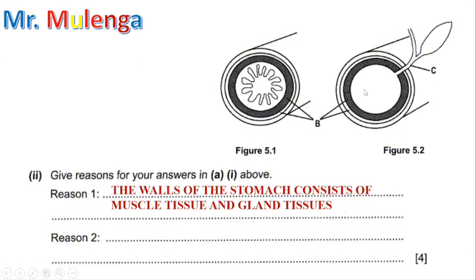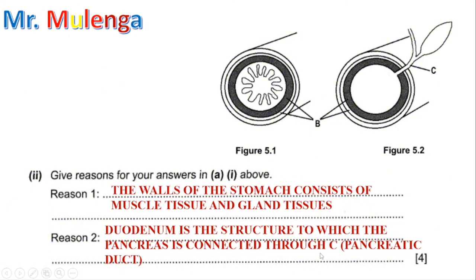For Figure 5.2, the reason we said it was taken from the duodenum is because of the part labeled C, which is the pancreatic duct. We can see that we have a pancreas connected here. The duodenum is the first part of the small intestine, and the pancreas is connected to it through C, the pancreatic duct. So the answer is: the duodenum is the structure to which the pancreas is connected through C, the pancreatic duct.